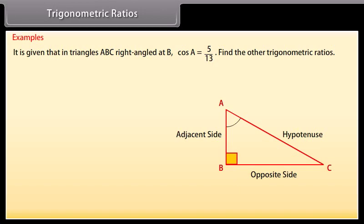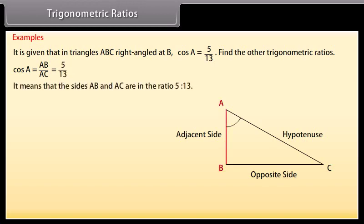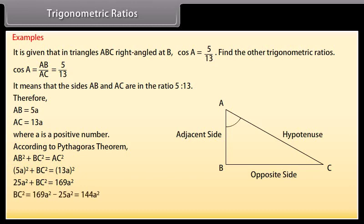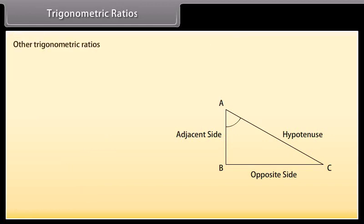Let us look at some examples to consolidate our understanding of trigonometric ratios. It is given that triangle ABC is right-angled at B, and cos A equals 5 upon 13. Find the other trigonometric ratios. Cos A equals AB upon AC, which is 5 upon 13. It means that the sides AB and AC are in the ratio 5 to 13. Therefore, AB equals 5a and AC equals 13a, where a is a positive number. According to Pythagoras' theorem, AB² + BC² = AC². Substituting the values: 5a² + BC² = 13a². Calculating, we get BC = 12a.